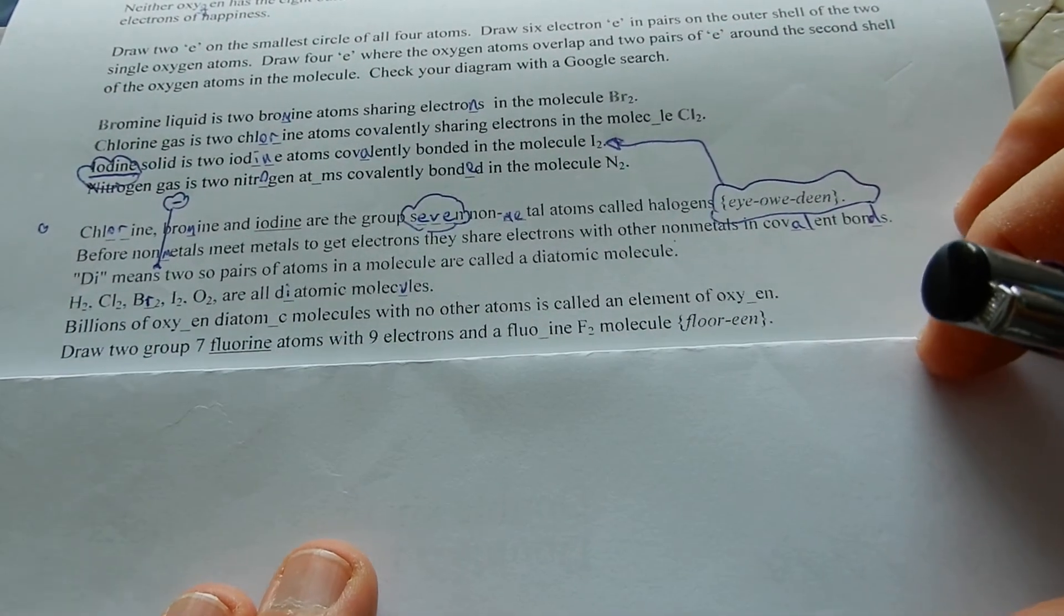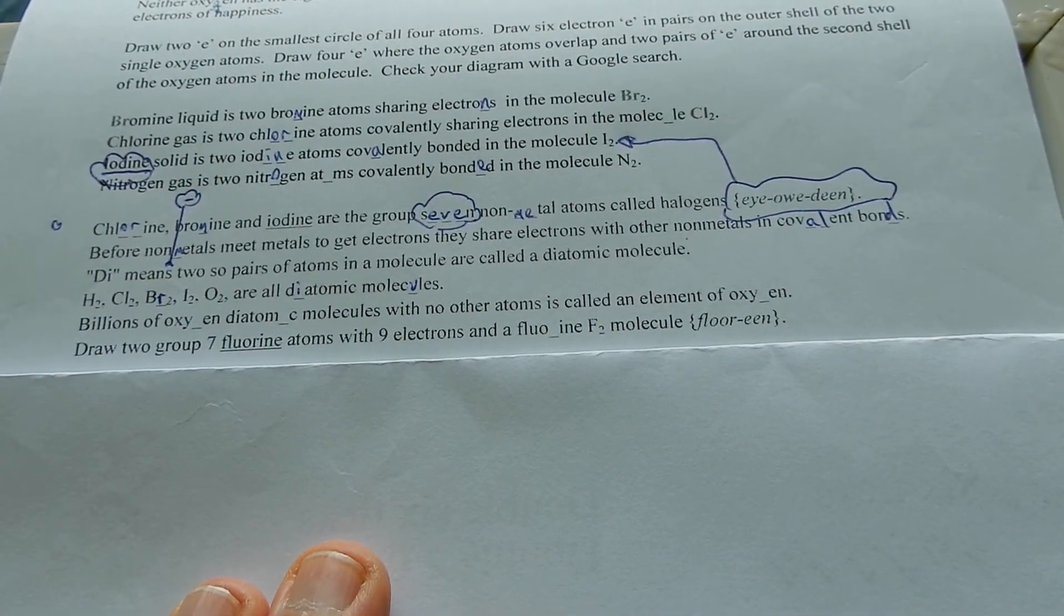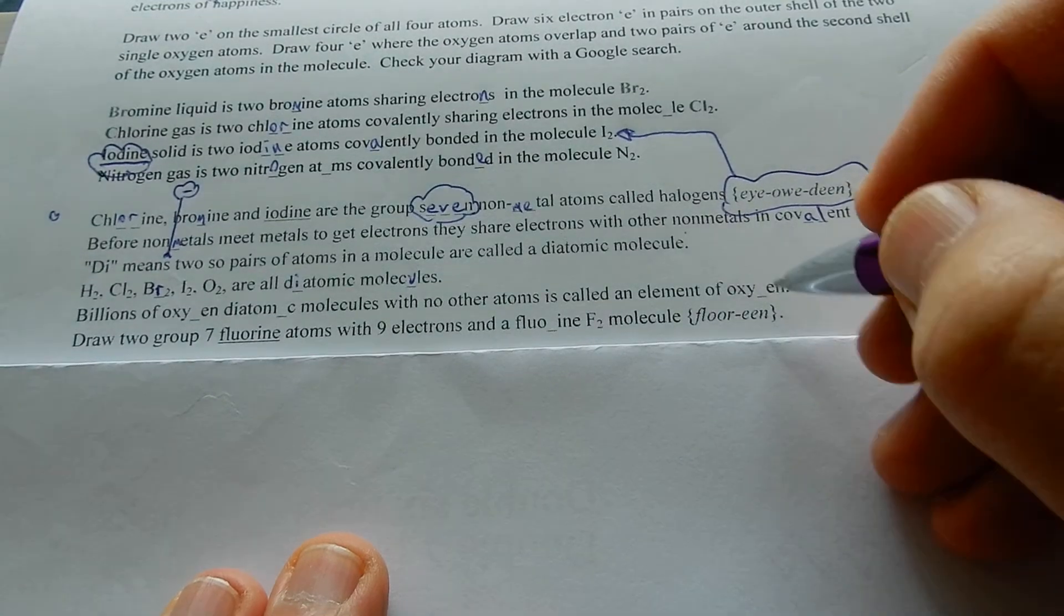Billions of oxygen diatomic molecules with no other atoms. It's called an element of oxygen.